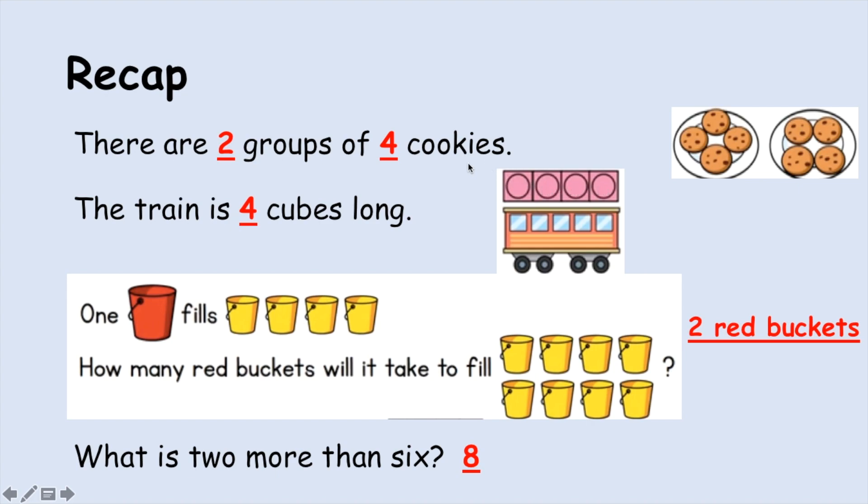One red bucket fills four little yellow buckets, and two red buckets fill eight small yellow buckets. Well done if you got that correct because that is really hard. What is two more than six? It is eight, so more means that it is getting bigger. Well done if you got those correct, Year One.